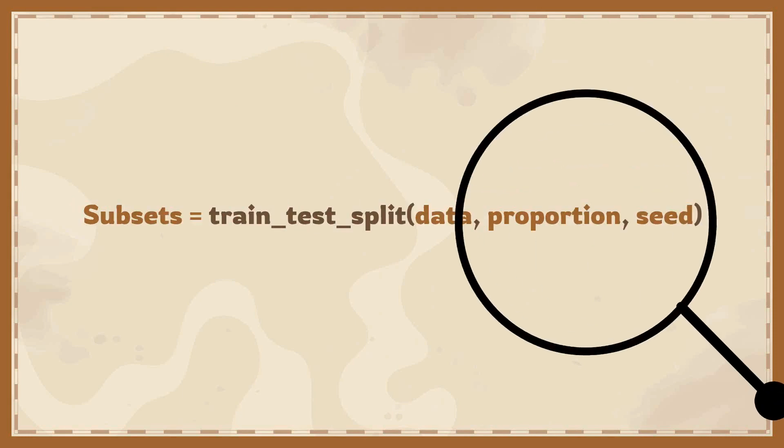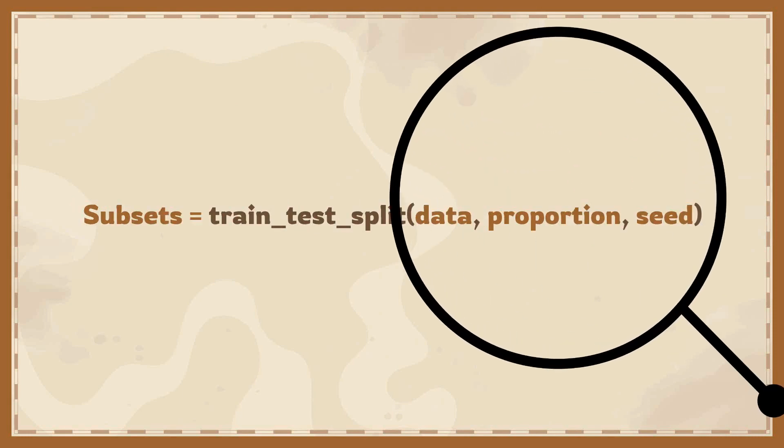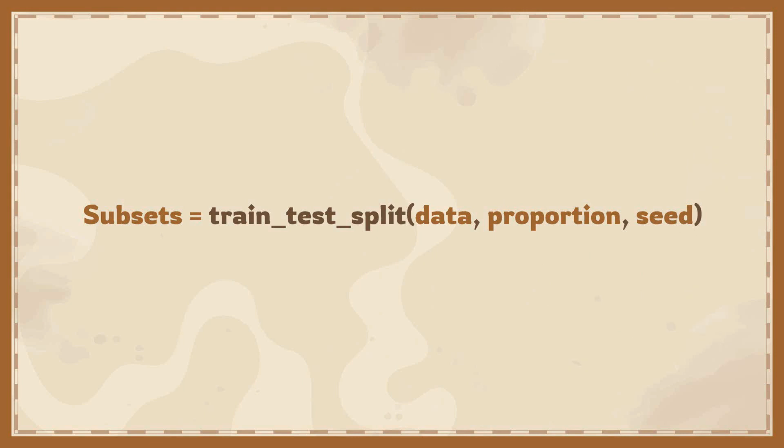To get the subsets, we need to pass at least three different parameters. The first parameter is data, the second parameter is splitting proportion, and the third parameter is random seed.